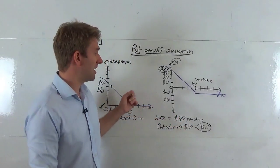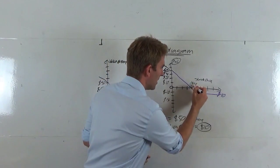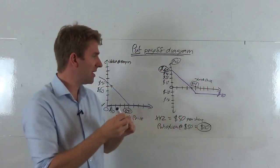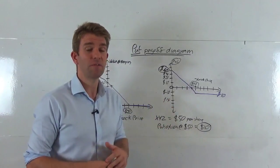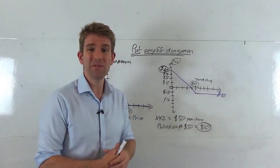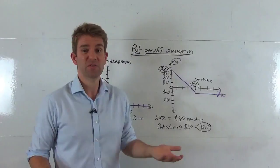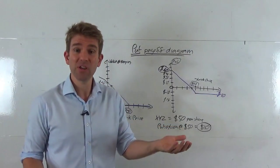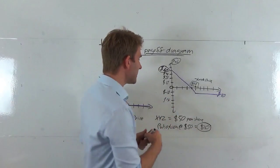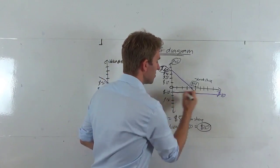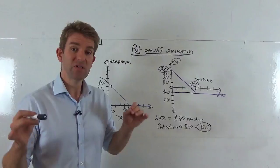Now let's say the stock price is trading at $50. We've got put options to sell stock at $50, but it's currently trading at $50 — does that have any value? No, as we saw, there's no intrinsic value; we can sell it in the underlying at $50. Unfortunately though, we paid $10 for that contract, so our profit and loss is going to be minus $10.